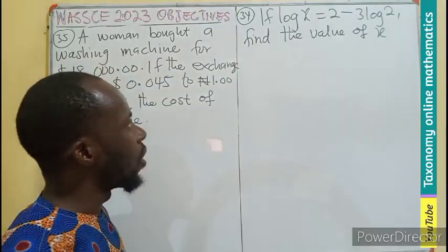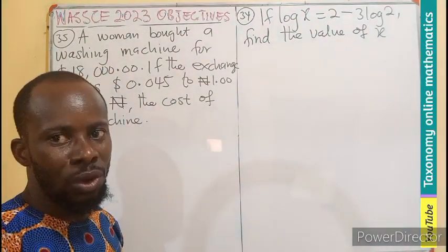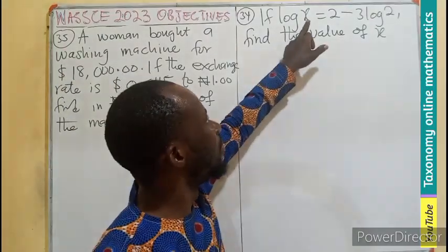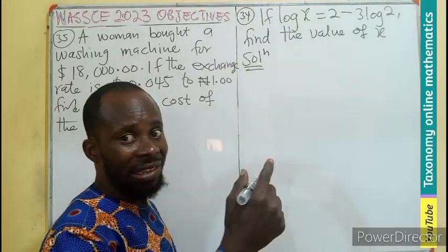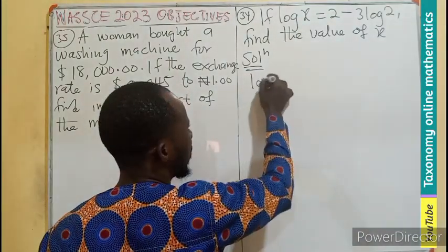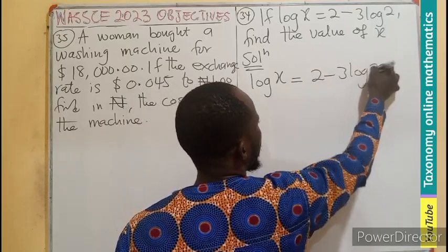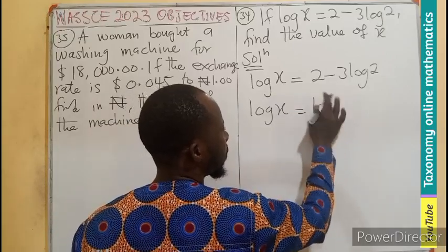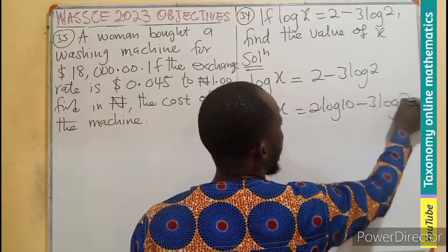Question 34. If log x = 2 - 3 log 2, find the value of x. When the logarithm is written without a base, it is in base 10. So I can rewrite this using the property that says that log of a number to the same base is 1.